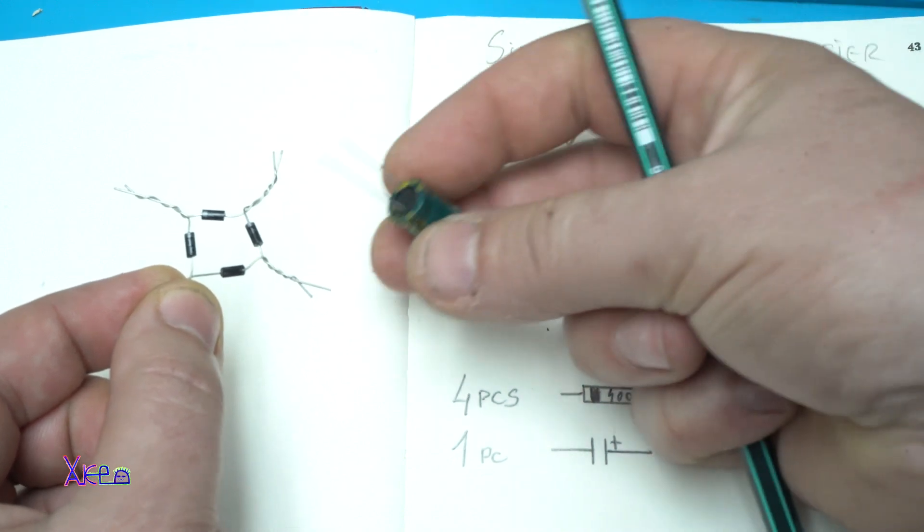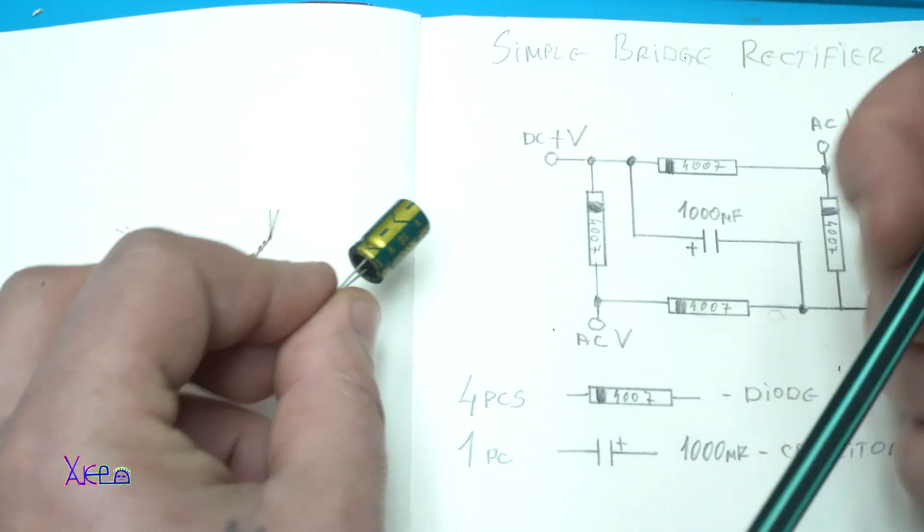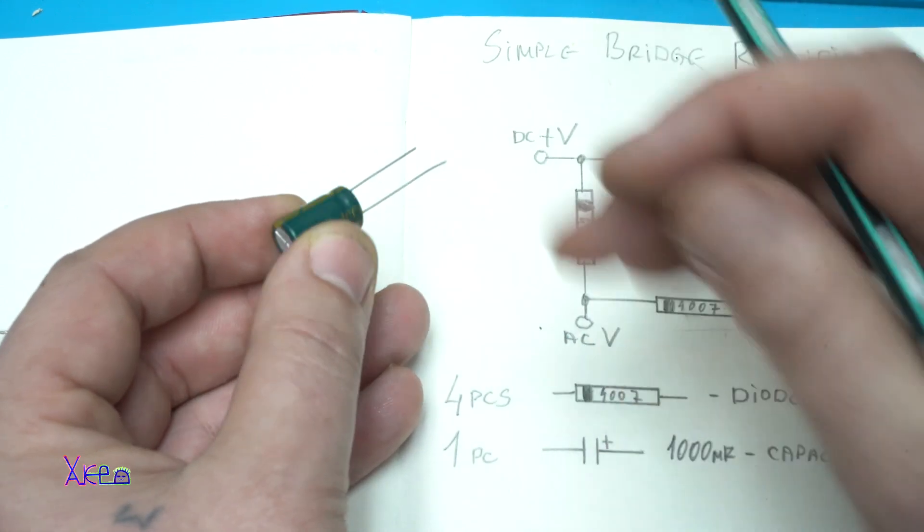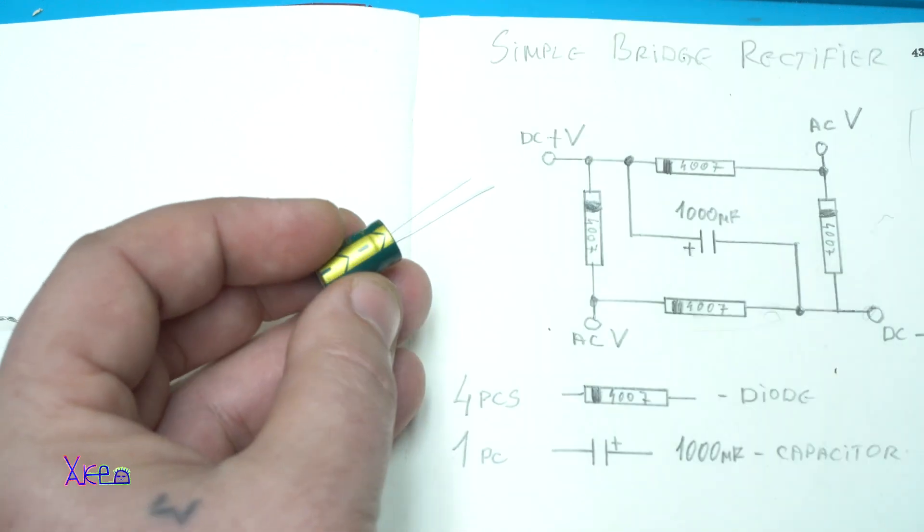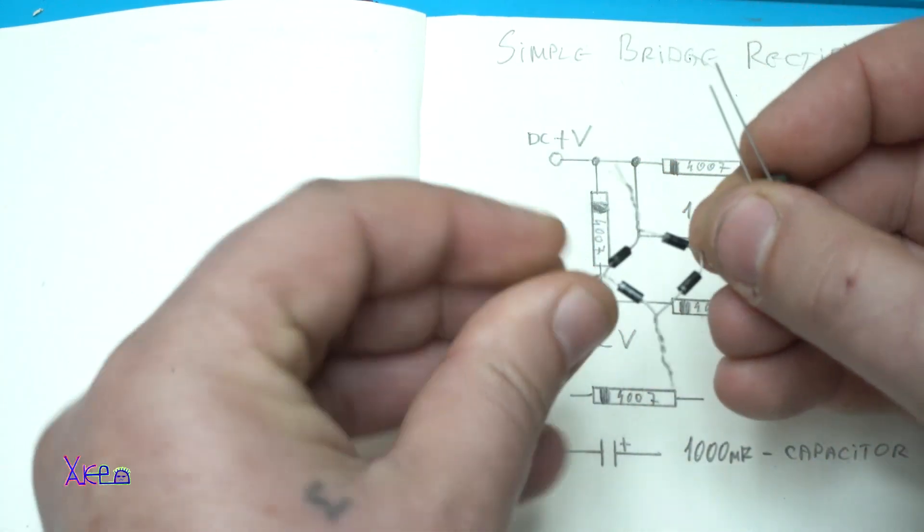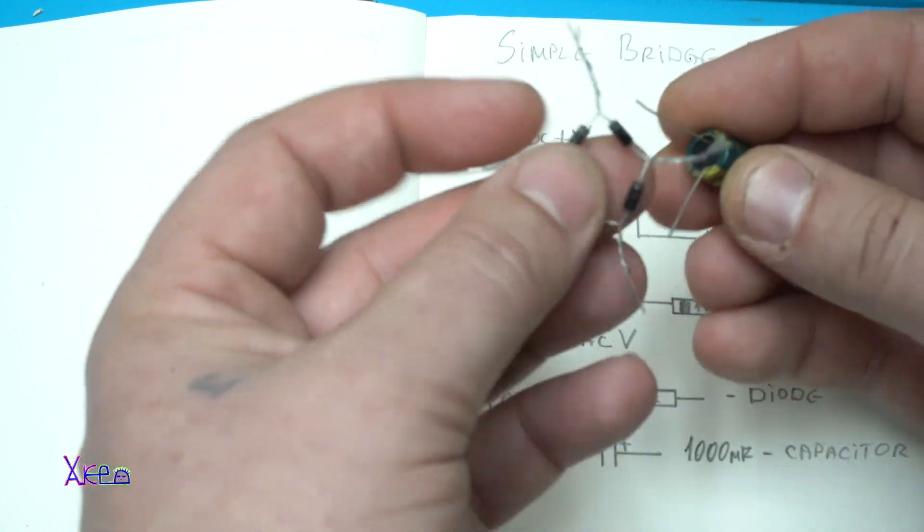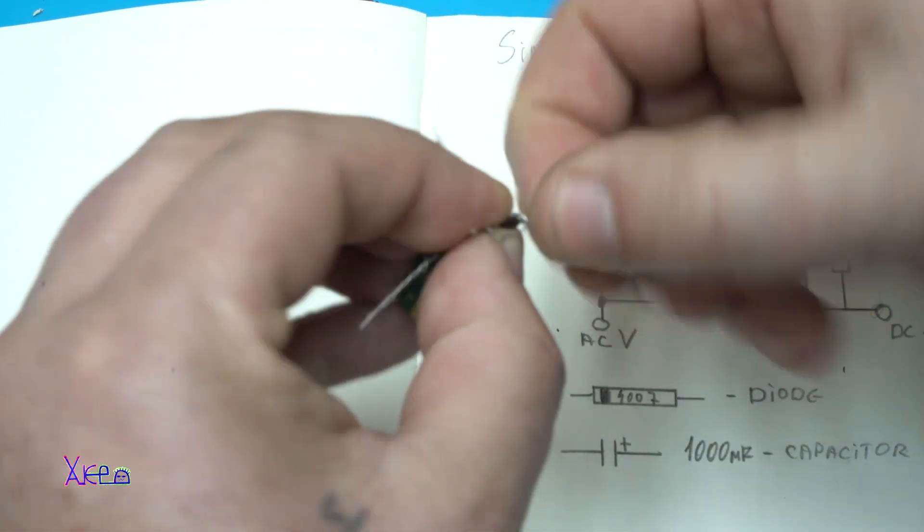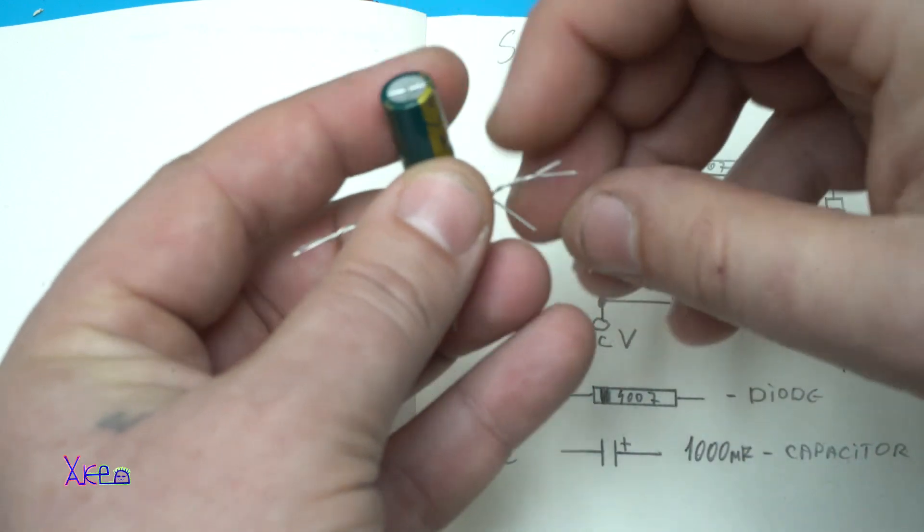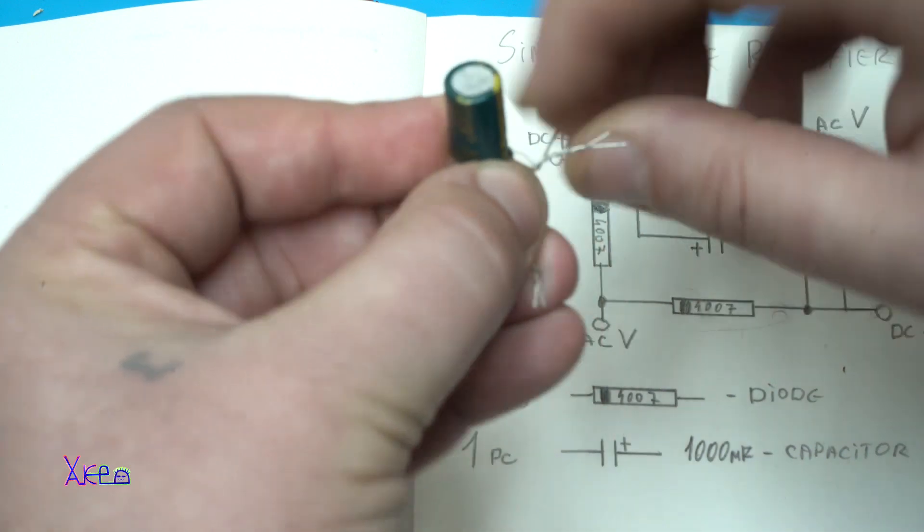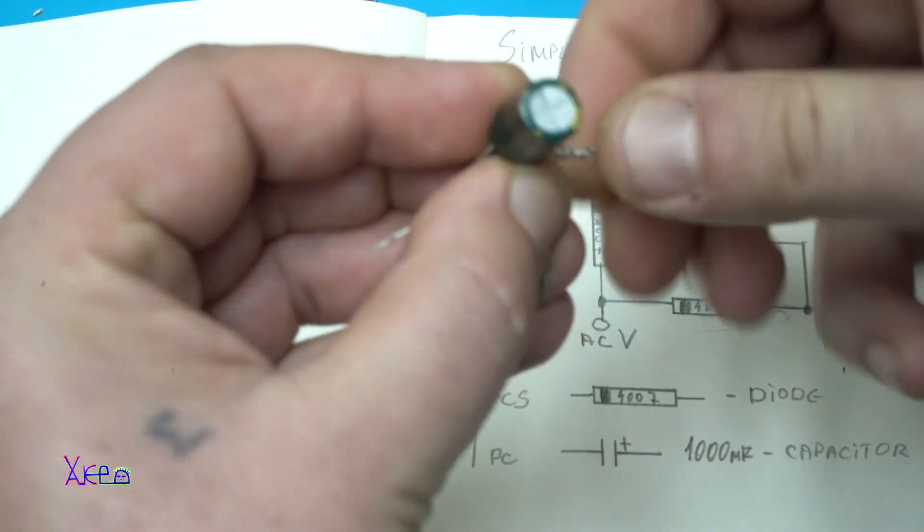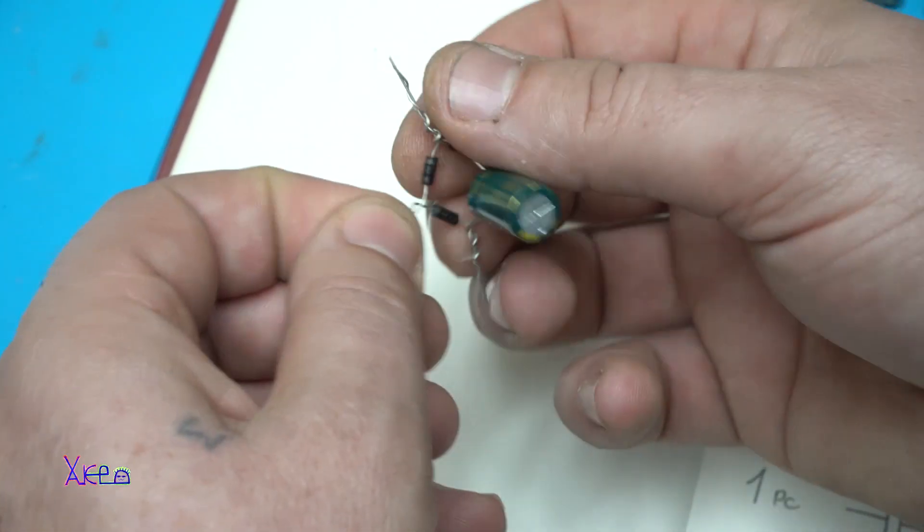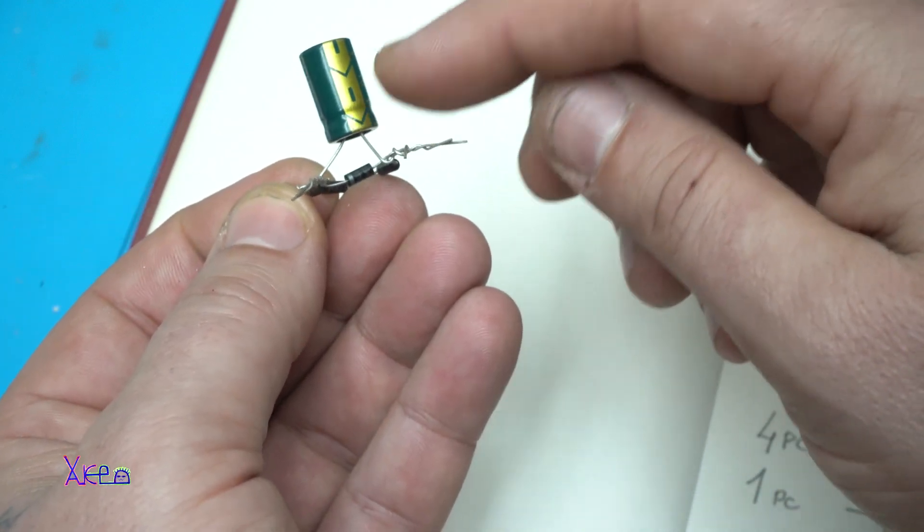Wires, we need to connect the capacitor: capacitor of 1000 microfarads and 16 volts. It has a negative sign, this is the one, and this means positive. Let's connect. It goes here and here. You can do this just by twisting the capacitor wires and diode wires together.